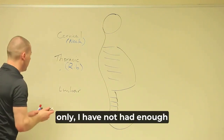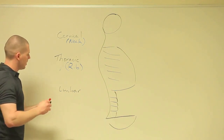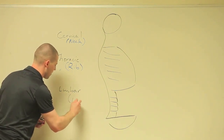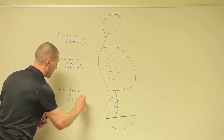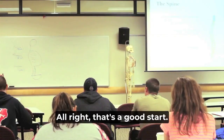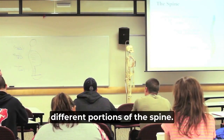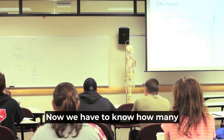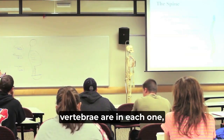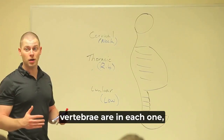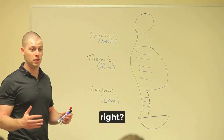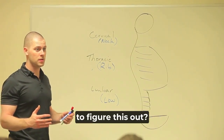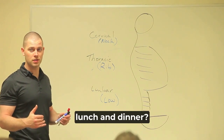All right, that's a good start. At least we know the three different portions of the spine. Now we have to know how many vertebrae are in each one. Do you guys know how to figure this out? Have you guys ever heard 'breakfast, lunch, and dinner'?